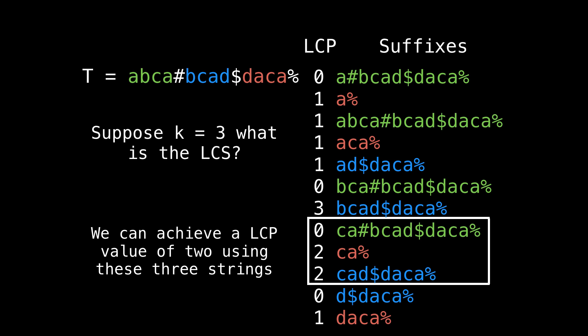Notice that each of them is a different color, meaning that they came from different original strings, and that the minimum LCP value in the selected window is two. Note that we must ignore the first entry in the window. This means that the longest common substring solution is the string CA of length two, which is shared amongst all three of s1, s2, and s3.